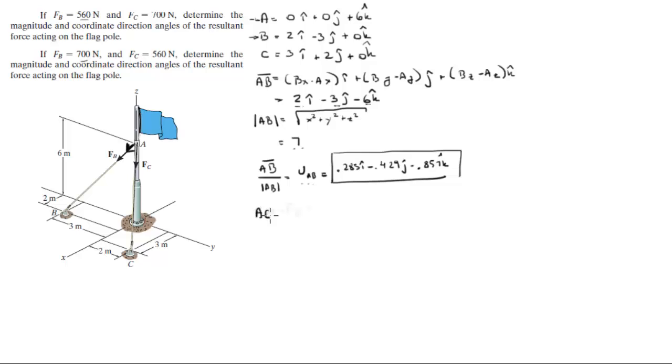Now let's do AC vector, calculated in the same manner which will be Cx minus Ax, Cy minus Ay and Cz minus Az. And you get that this vector is equal to 3i plus 2j minus 6k. Calculating the magnitude of this vector is also 7 and dividing the vector by its magnitude gives you the unit vector AC, which is this unit vector right here with a length of 1. This unit vector is 0.429i plus 0.286j minus 0.857k.